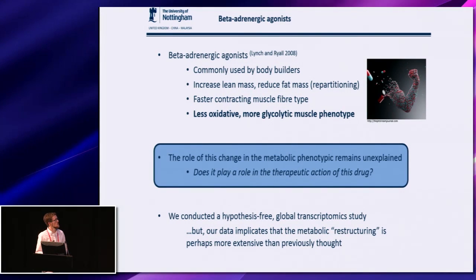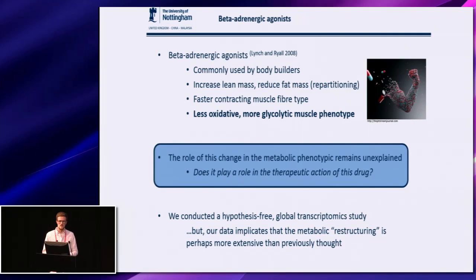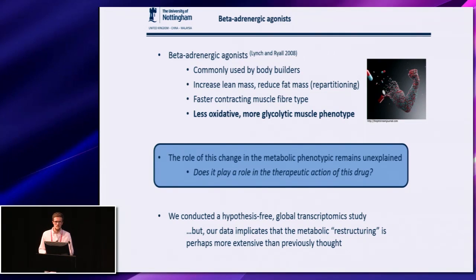Today I'm going to present a bit about beta-adrenergic agonists. In particular, we used ractopamine, which is a mixed beta-1 and beta-2 adrenergic agonist. These are commonly used by bodybuilders. They typically increase lean mass and reduce fat mass. They also induce other phenotypes on the muscle — a faster contracting muscle fiber type — and typically you get a switch in metabolism as well, from a less oxidative to a more glycolytic phenotype. This is very well characterized, and yet it remains unexplained as to why that actually happens, and perhaps more importantly, does that metabolic change play a role in the therapeutic action of those drugs?